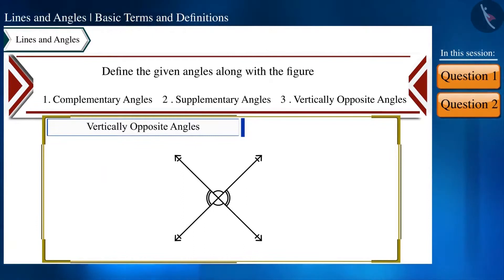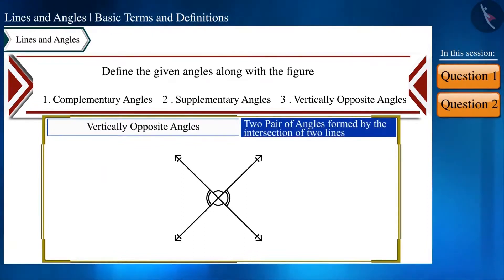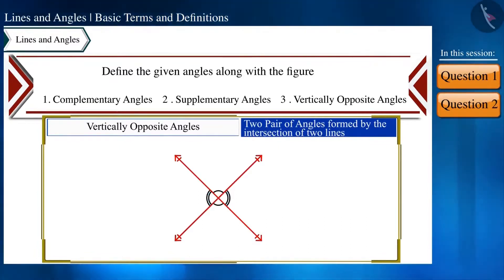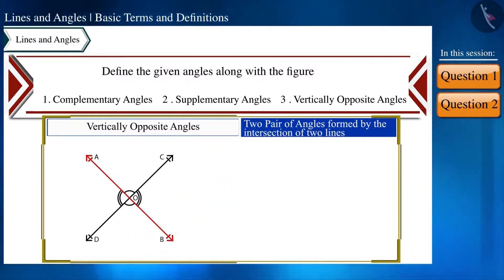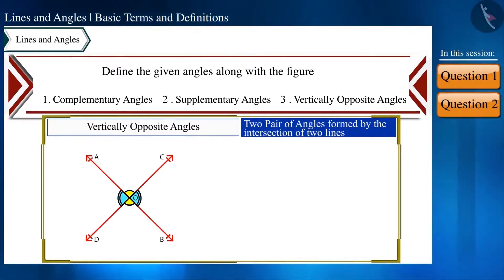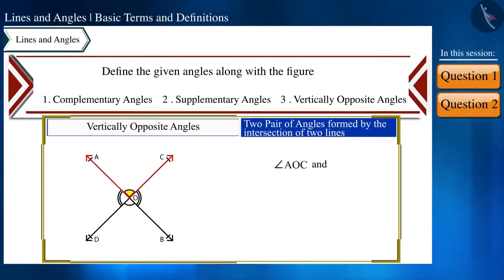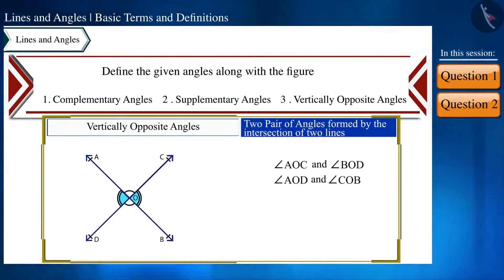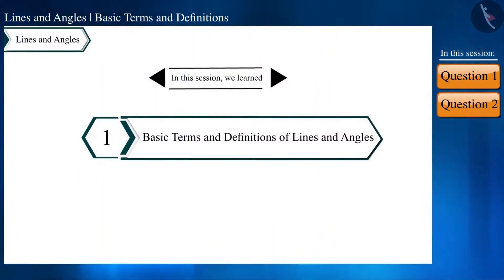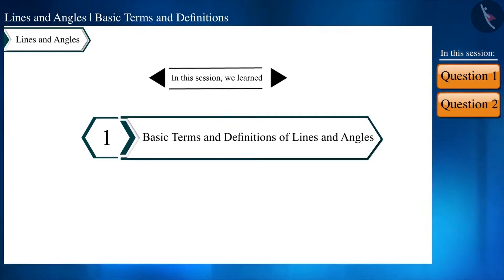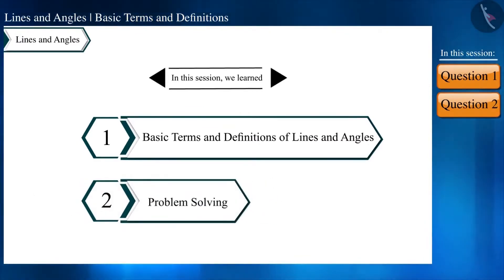Now let's look at vertically opposite angles. When two lines intersect each other, vertically opposite angles are formed. Here, line AB and line CD intersect at point O. The first pair of vertically opposite angles is angle AOC and angle BOD, and the second pair is angle AOD and angle COB. That's all in this session.